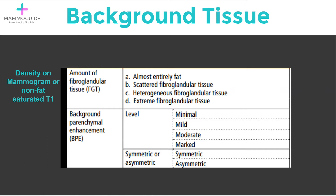The second unique feature to breast MRI is the background parenchymal enhancement. This is how bright the tissue gets after intravenous contrast administration. This is best evaluated on the first post-contrast sequence. It's divided into four categories.